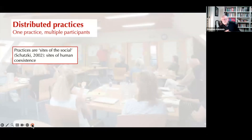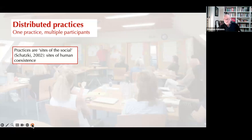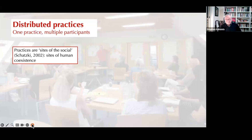We're talking briefly about distributed practices. When we began in episode two, talking about practices, one view was that they were the intentional actions of an individual person. But there are many kinds of practices that are actually distributed—it's a single practice, but it has multiple participants. Now, for Schatzki, practices are necessarily the site of the social—that's the title of his 2002 book. They are sites of human coexistence. We coexist in practices.